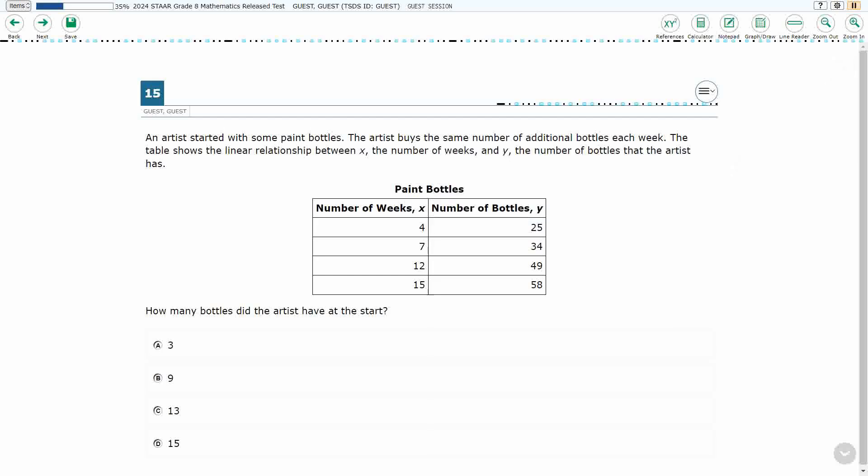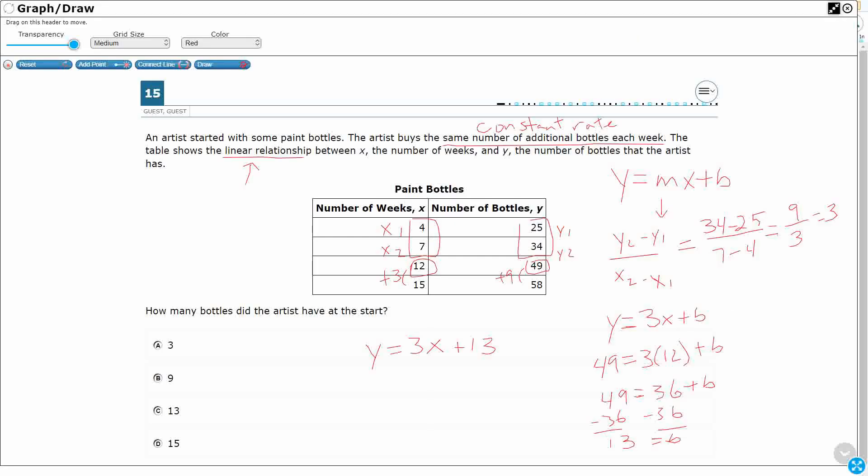And what we need here is we need to find the starting point. Well, the starting point is going to be the y-intercept. That's at 0. So that is going to be our C13.